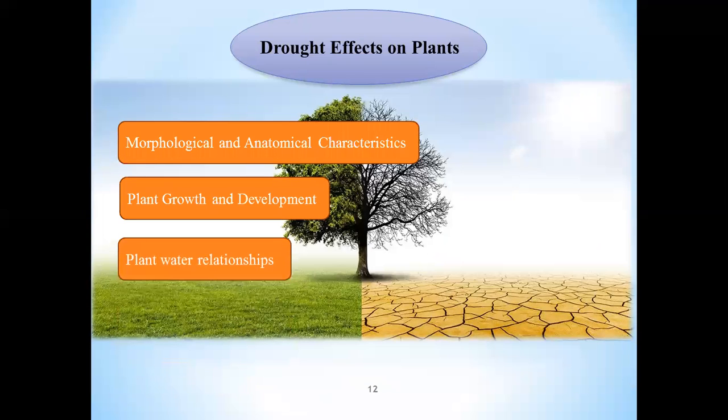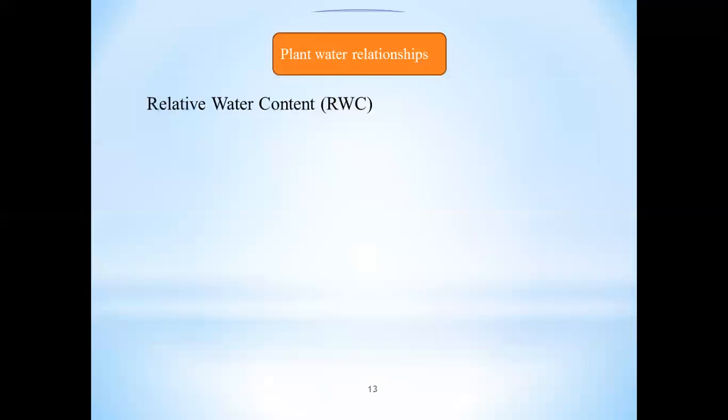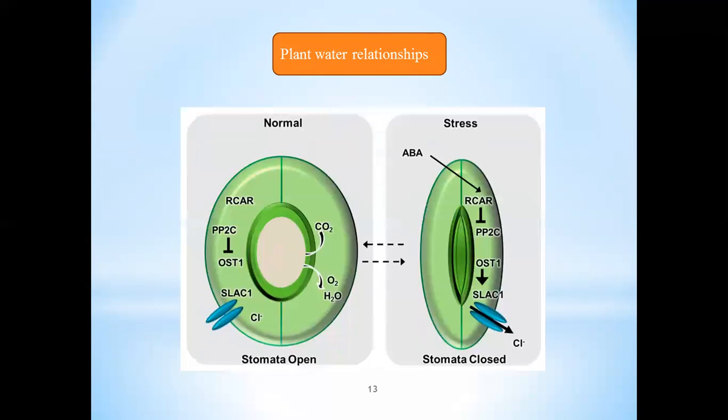Three is plant water relationships. Relative water content or RWC is an important indicator of water status in plants. It reflects the balance between water supply to the leaf tissues and transpiration rates. Reduction of RWC is the earliest effect of drought on plants. Low RWC decreases the leaf water potential and leads to stomatal closing. As you can see, stomatal closure is a complicated process that prevents water loss from transpiration pathway.